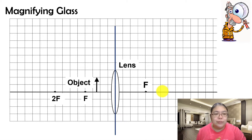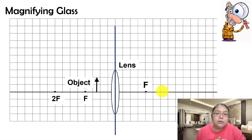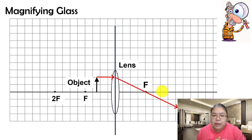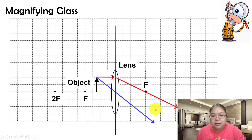Now we will see how to produce the ray diagram. We use the first ray and the third ray to draw. The first ray travels parallel then goes through f. The third ray passes through the center of the lens. You find these two lines diverge — they go further and further apart.